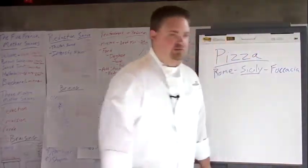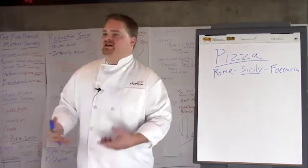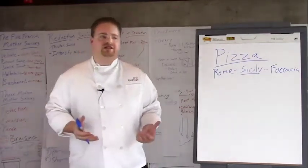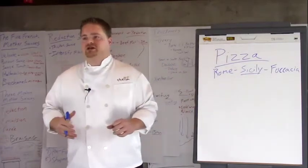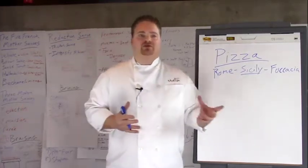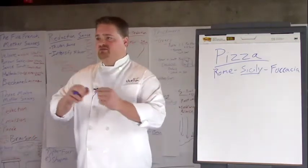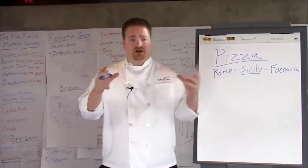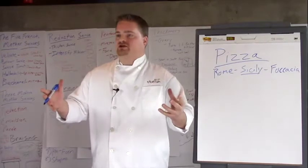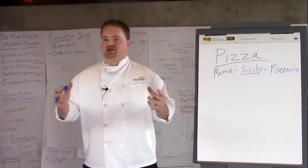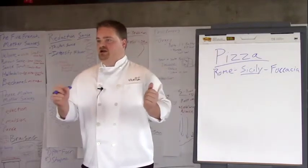Focaccia is a big, thick, doughy piece of bread that has some fat in it, usually olive oil. When we talked about baker's percentage, anything below 5% fat content is there mainly to help with extensibility — meaning it makes the dough easier to stretch — because it shortens the gluten strands. That's why they call fat 'shortening': it actually shortens gluten strands, making the dough more pliable and easier to stretch.